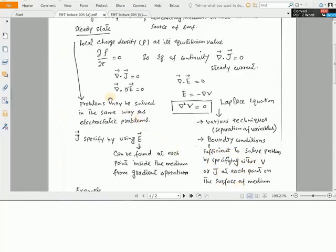Regarding steady state condition, we can solve the steady state problems by converting them into equivalent electrostatic problems. Here we can specify J by using electric field E, and that electric field E can be found at each point inside the medium from the gradient of potential. Once we know about the electric field, we are in a position to find out the current density, and the current density will help us describe the steady state condition of a system.